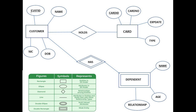Here we have the entity types customer, card, and dependent. Customer has attribute types customer ID, name, nick, and date of birth. Customer ID is underlined, meaning it's a primary key. The card also has card ID underlined as its primary key, and the dependent has name underlined. The dependent entity type is double-squared, which in the legend means it is a weak entity because it borrows an attribute from the customer — customer name — which becomes the key attribute type, since the dependent entity type doesn't have a key attribute of its own.